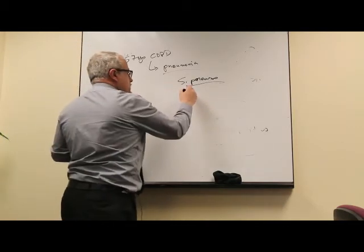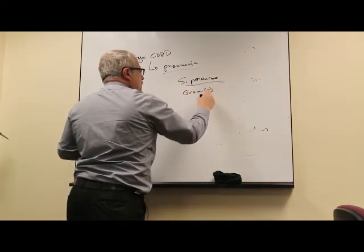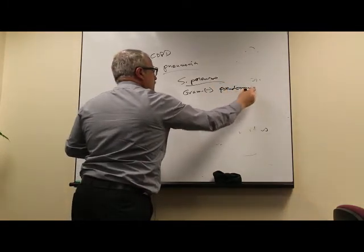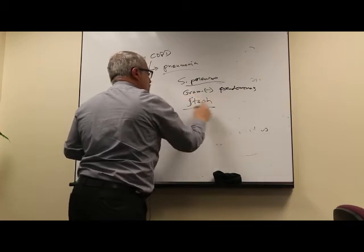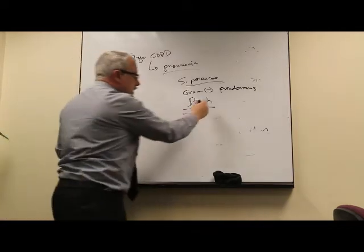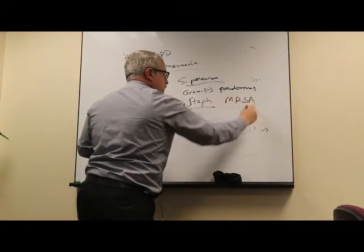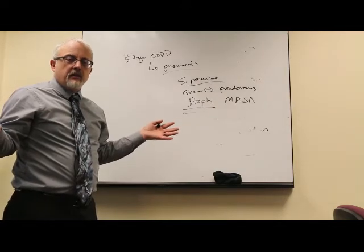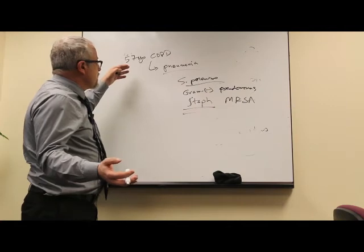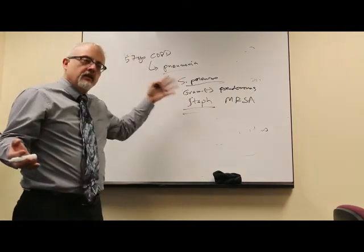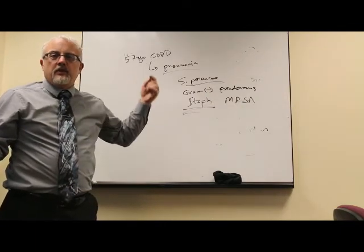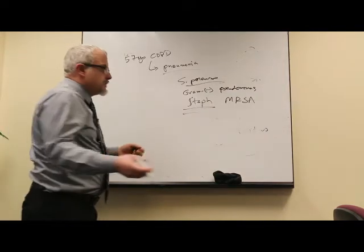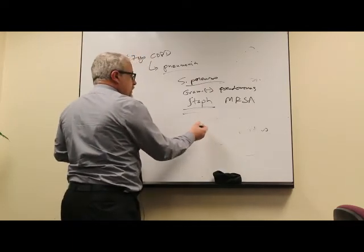What bugs do we need to cover? You always need to cover strep pneumo, even though this is a hospital-acquired pneumonia. You need to cover, because it's hospital acquired, gram negatives. And this guy is very sick, and we're going to cover Pseudomonas. And you probably need to cover staph as well, because hospital-acquired pneumonia, staph can be a significant player. And if you're in the hospital, now you're stuck covering MRSA. So now you have to cover with this incredibly huge spectrum of antibiotics.